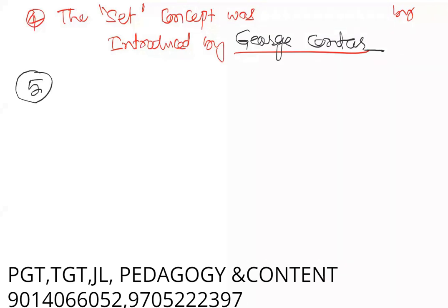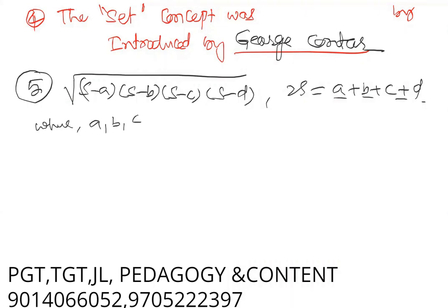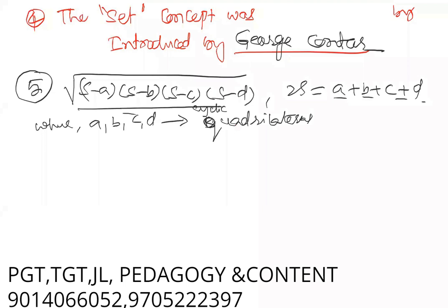Next, the fifth one. The formula: square root of (S minus A) into (S minus B) into (S minus C) into (S minus D), where 2S equals A plus B plus C plus D, and A, B, C, D are the four sides of a cyclic quadrilateral. This formula was utilized by the mathematician for the cyclic quadrilateral. Who is that mathematician? Brahma Gupta.